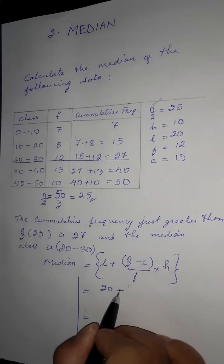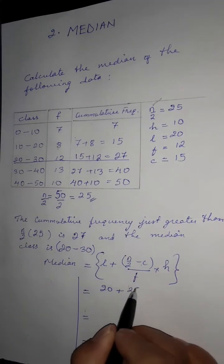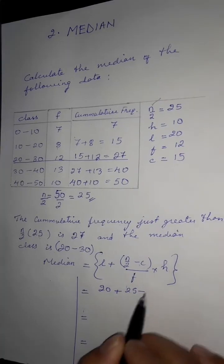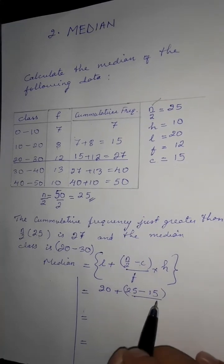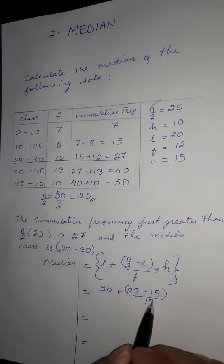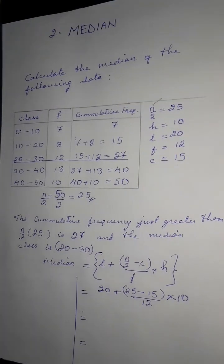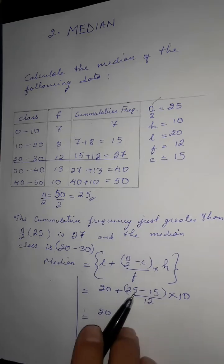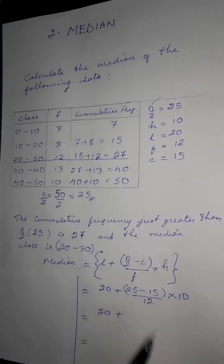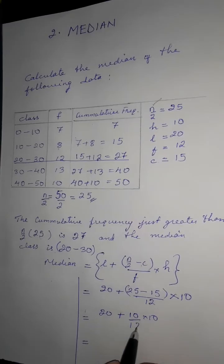n by 2 is 25. The median formula: L plus (n/2 minus c) divided by f, multiplied by height. So: 20 plus (25 minus 15) divided by 12, multiplied by 10. That gives 25 minus 15 = 10, multiplied by 10, divided by 12.